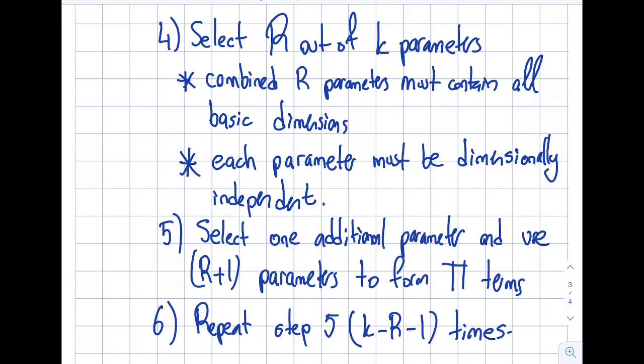And the second section is each parameter, every single parameter must be dimensionally independent. So for instance if I have a velocity one and velocity two as two parameters that impact my drag force then I cannot select both the velocities as repeating variables.